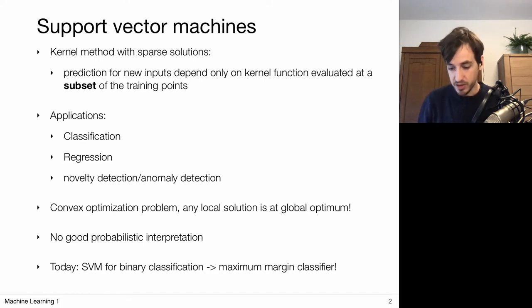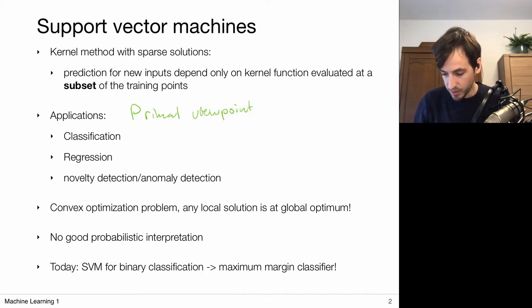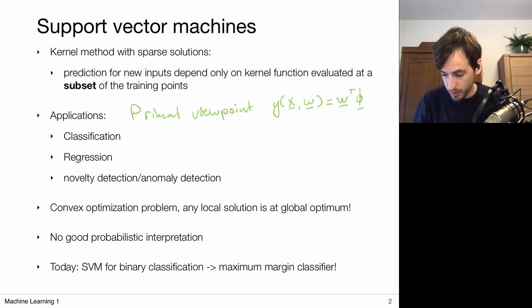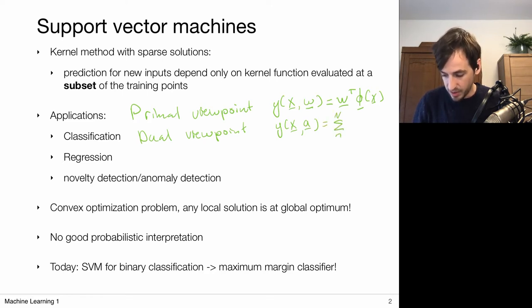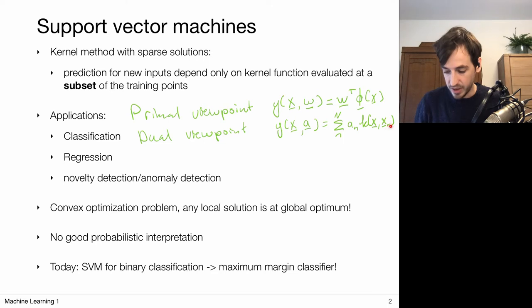Relating this to the original models, we have the primal viewpoint in which models — classification or regression — are parameterized by a set of weights w. Then we talked about the dual viewpoint, in which my model is parameterized by dual parameters that essentially define how to base my prediction on a linear combination of my kernel evaluated relative to all existing data points in the training set.